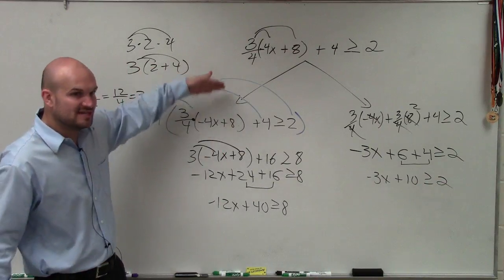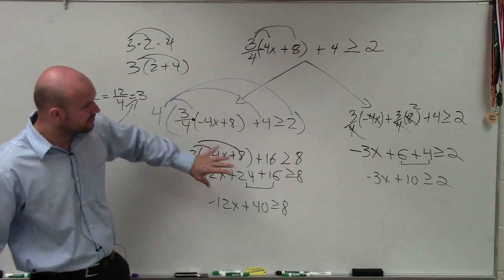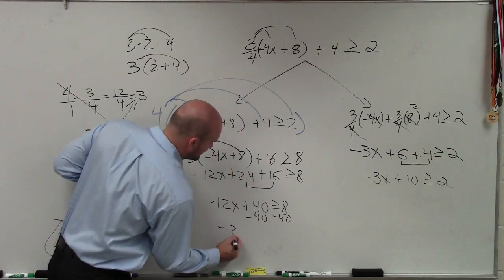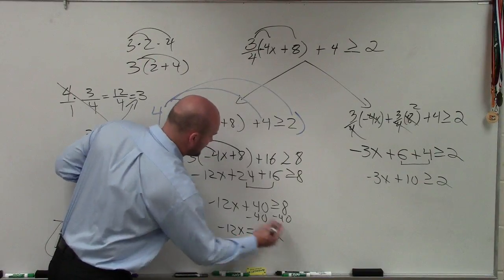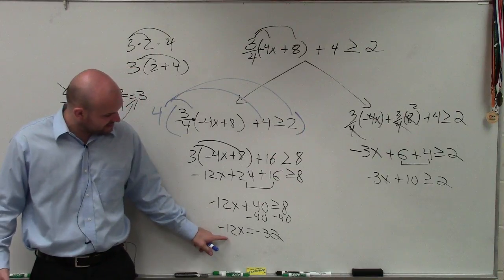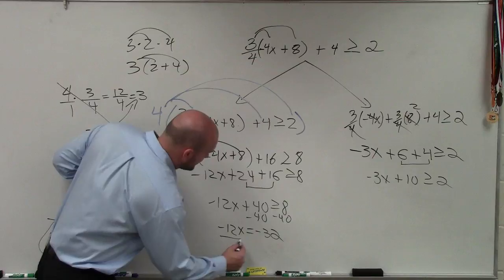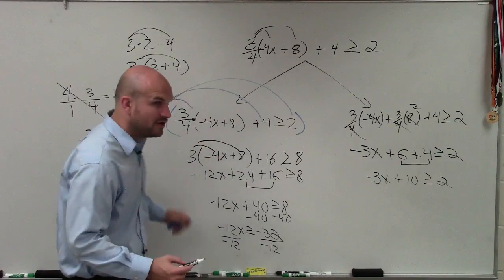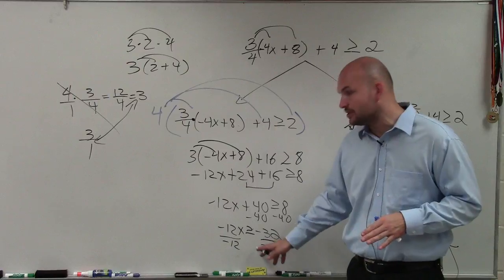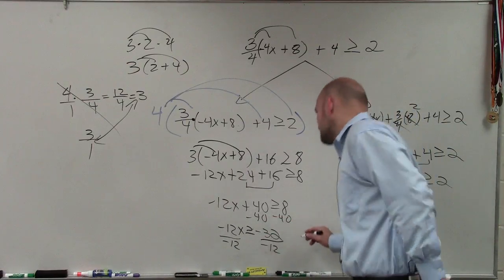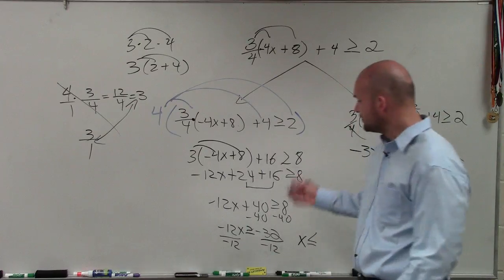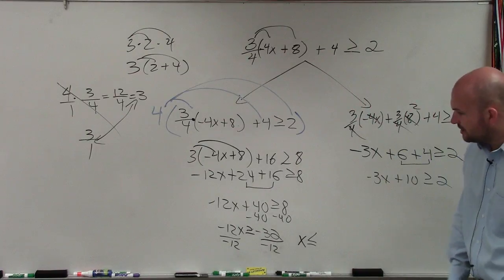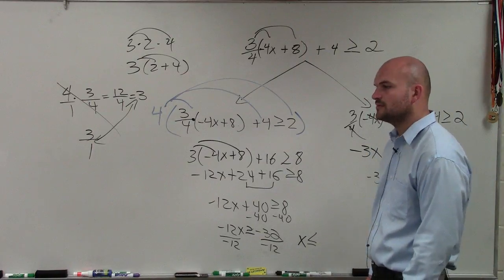Now, again, guys, I know I'm doing it twice. This obviously, they're not exactly the same, but you'll be able to see we'll get the same answer. So I subtract 40, subtract 40, -12x equals -32. And the important thing that I wanted to have you guys get is now I'm dividing by -12. So when I divide by -12, I've got to make sure whenever you multiply and divide by a negative number, you have to flip the sign. So I have x is now less than or equal to 32 divided by 12 is going to be 1, 2, 24, and 8/12.